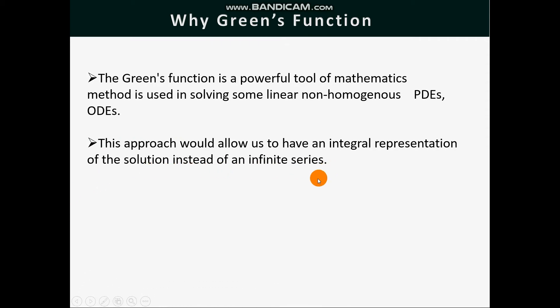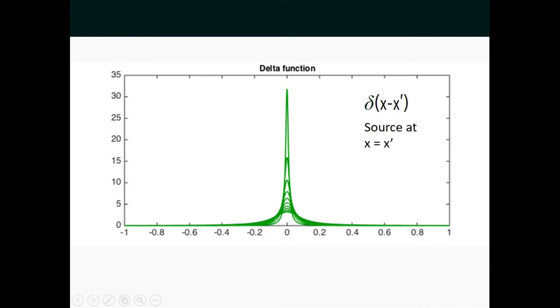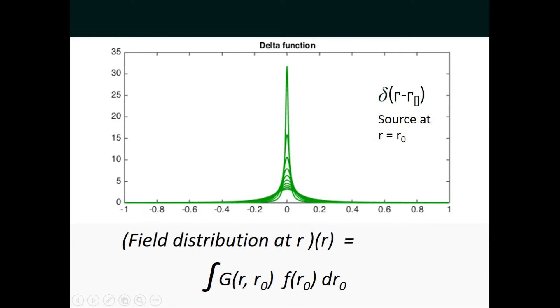To obtain the field caused by the distribution source, we calculate the effect of each elementary portion of source and add, that is, integrate them all. If g is the field at the observer's point r caused by a unit source at the source point r0, then the field at r caused by distribution f of r0 is the integral of f of r0 times g of r, r0 over the whole range of r0 occupied by the source. The function g is called the Green's Function.